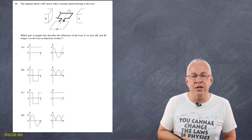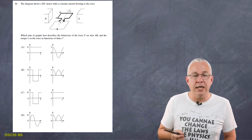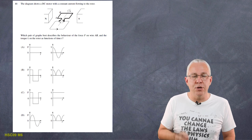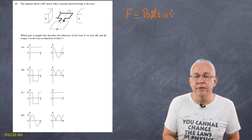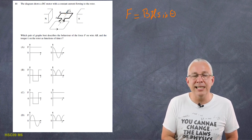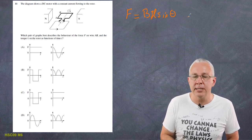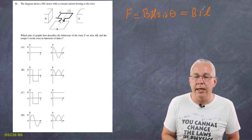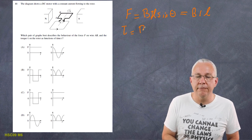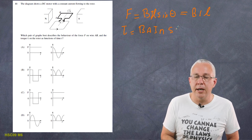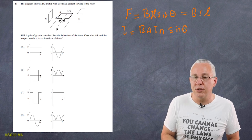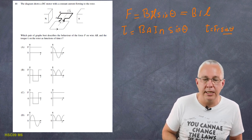Question 11: the diagram shows a motor with a constant current flowing in the rotor. Which paragraph best describes the behavior of the force on wire AB and the torque on the rotor as a function of time? The motor effect: force equals BIL multiplied by sine of the angle. For wire AB, which is always perpendicular to the magnetic field lines, the force simplifies to F = BIL. For the torque, it equals B times cross-sectional area times current times number of turns times sine theta.